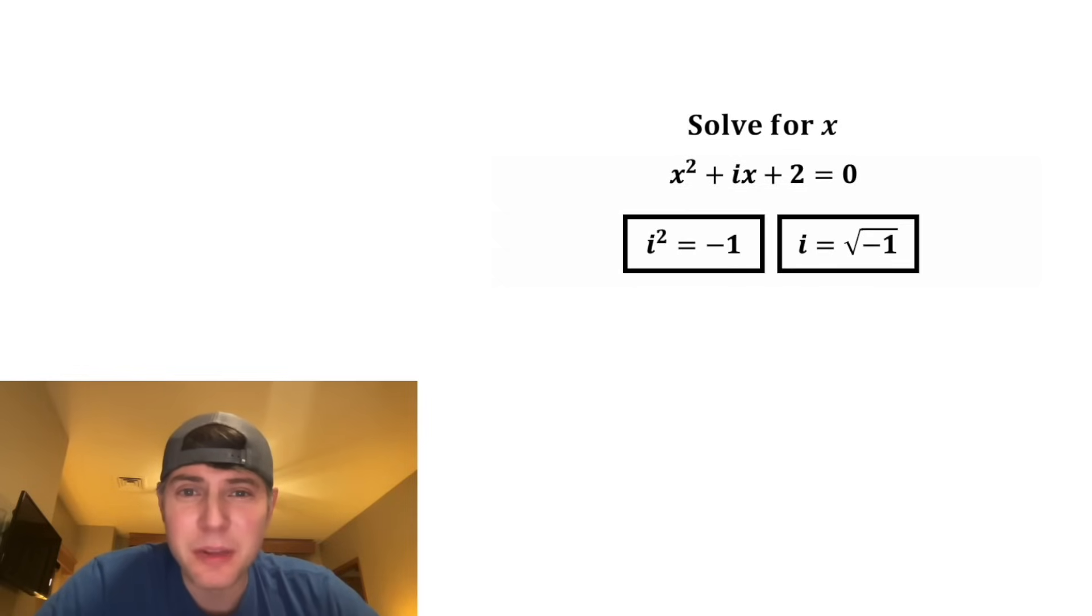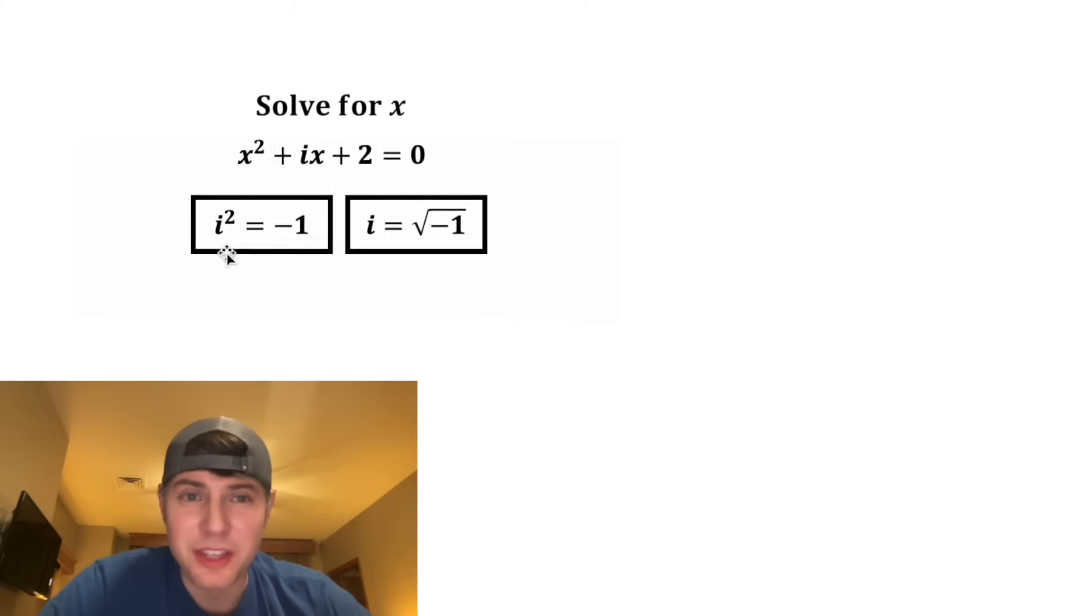This i coefficient can be thought of two different ways. You can think of it as i squared is equal to negative 1, or i is equal to the square root of negative 1. It's called the imaginary number, and you can do a lot of useful things with this i.